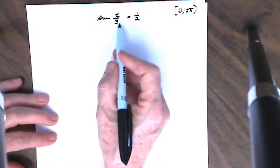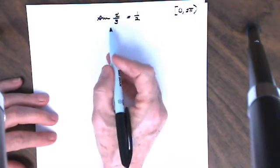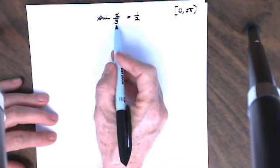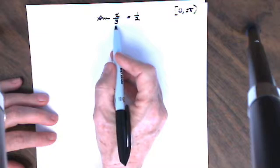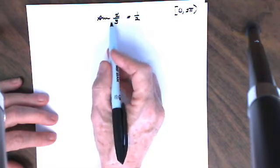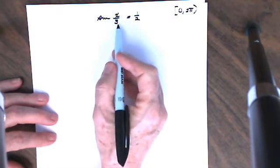We're going to solve a trigonometric equation. We have something other than a single x or a single theta here. This time we have a fraction of an angle, and I'm going to use the method of substitution to solve this problem.